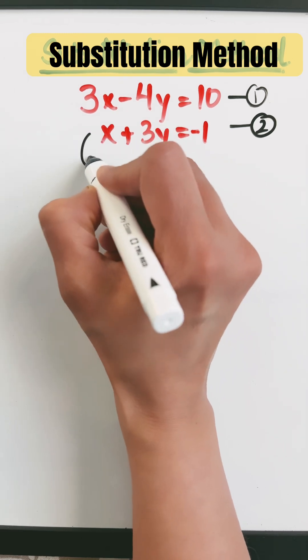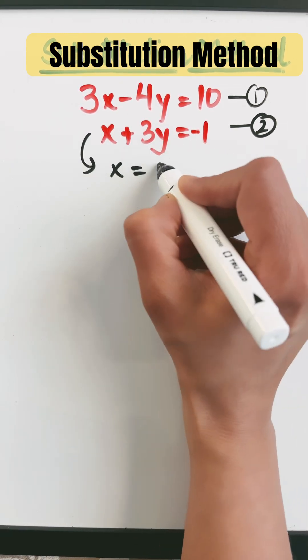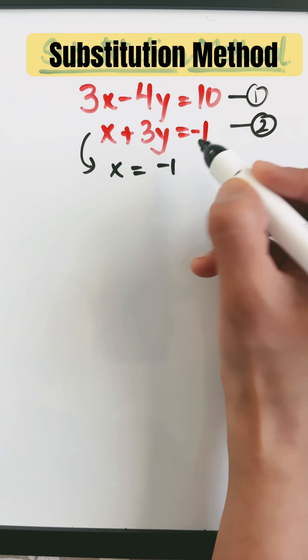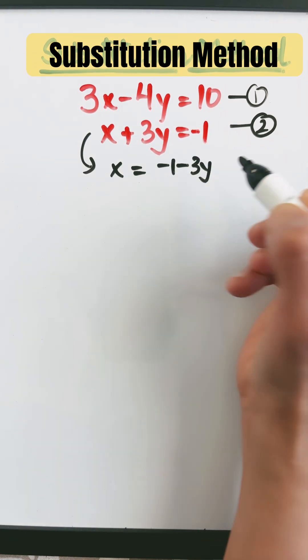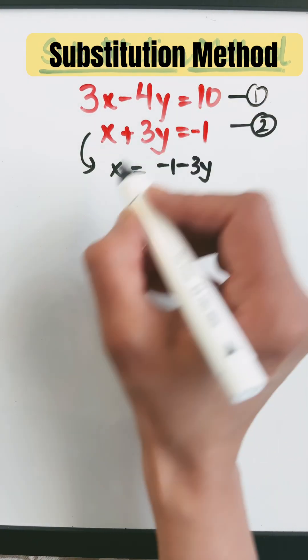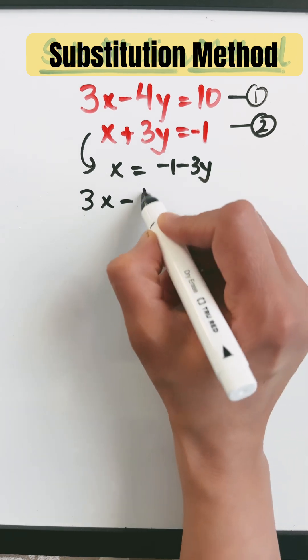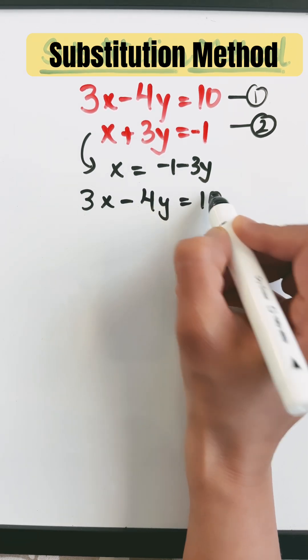From the second equation, I can take out the value of x as x equals minus 1 minus 3y. Put this expression of x in equation number 1. We get 3x minus 4y equals 10 is my original equation.